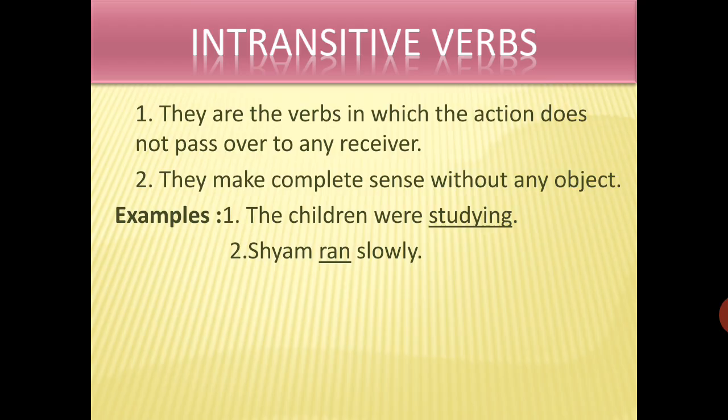Main verbs are of two kinds: intransitive verbs and transitive verbs. Auxiliary verbs are also of two kinds: primary verbs and modal auxiliaries. First type — intransitive verbs. Here the action does not pass over to any receiver because there is no object. They make complete sense without any object. For example, 'The children are studying' — you do not know what they are studying, so there is no object. That's why 'studying' is an intransitive verb. Similarly, 'Sham ran slowly' — 'slowly' is an adverb, the object is not known. That's why 'ran' is an intransitive verb.